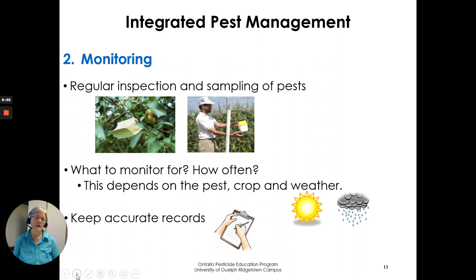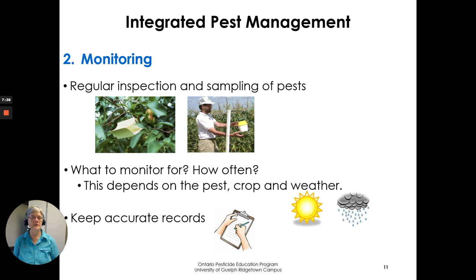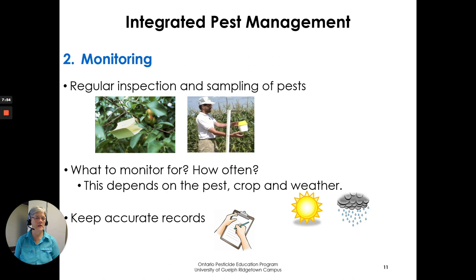Monitoring is the second component of integrated pest management. You're regularly inspecting and sampling for pests in the crop. There are many ways of doing that for different insects — here we can see a trap in an apple tree and another trap in front of corn. There are specific traps for particular crops. You'll need to go to OMAFRA or your pest specialist to find out what to monitor for, how to monitor, and how often to go out and look. You may also want to keep accurate records of the weather, as that can affect how quickly pests develop and move through a crop.